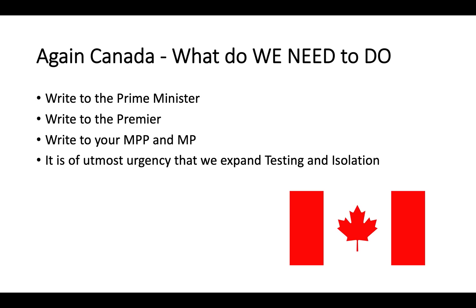For Canada, what do we need to do? You need to write to your prime minister, your premier, your member of provincial parliament and your member of parliament. You need to tell them it's of utmost urgency that we expand testing and isolation. I know there's not enough testing right now, folks, but we need to get more — that's why we're writing.